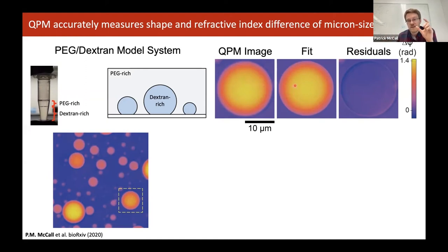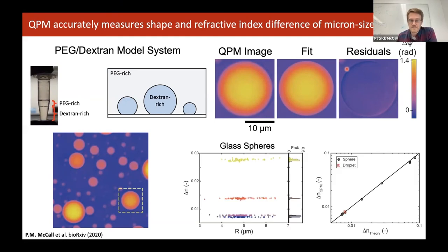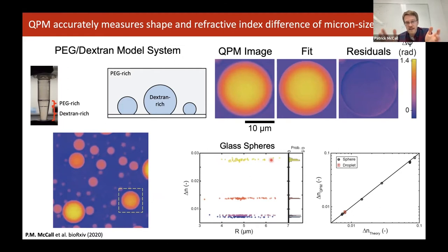The only free parameter left is the refractive index difference itself. From the residuals, we actually have a flat interior. There is a systematic residual at the exterior, but this we think comes from a lensing artifact. For these PEG-dextran model droplets, and also glass spheres embedded in a glycerol-water mixture where we can tune the refractive index difference, we see no systematic size dependence at all. We're able in each case to get a very consistent and precise measure of the refractive index.